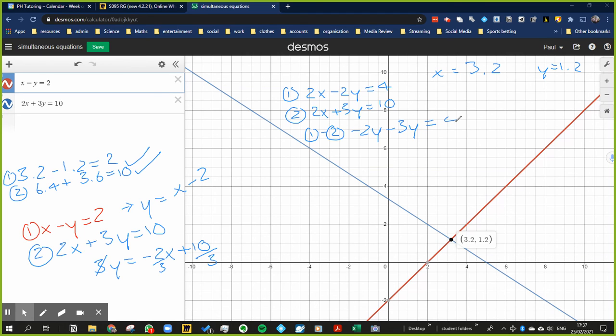Okay, so on the left hand side now we have minus 5y is equal to 4 minus 10 which is minus 6. Okay, so that means that y is going to equal, well we could say minus 6 over minus 5, or we could just say 6 over 5, which is 1 and a fifth, which is 1.2.